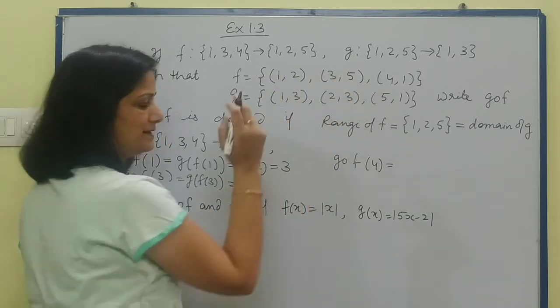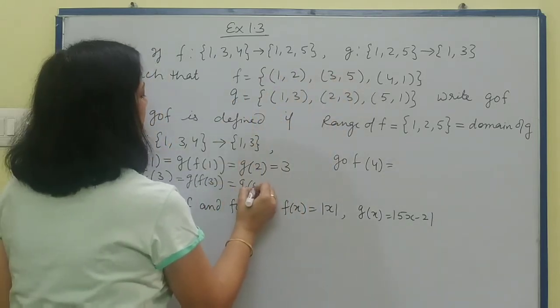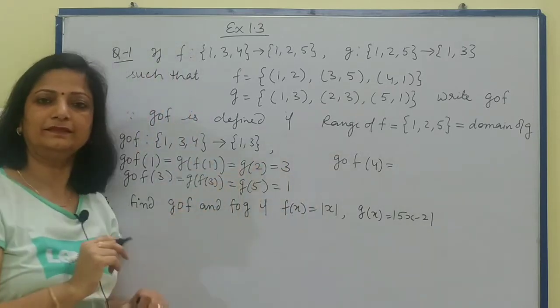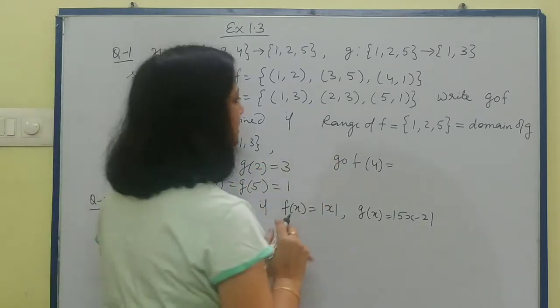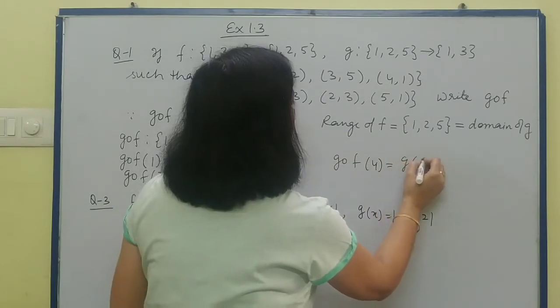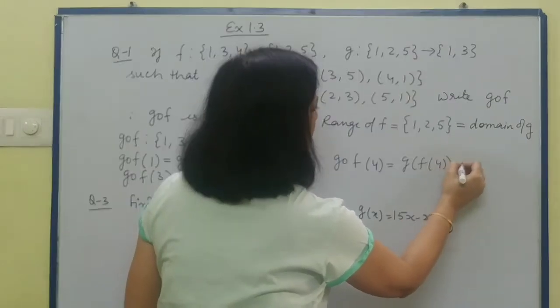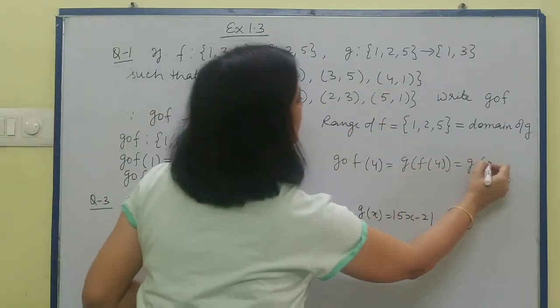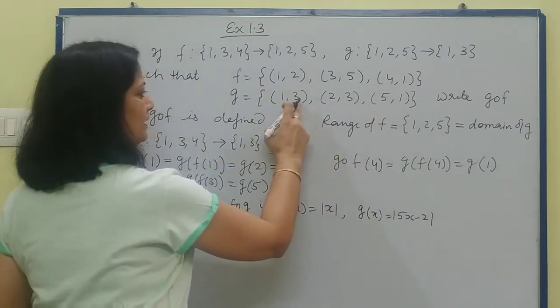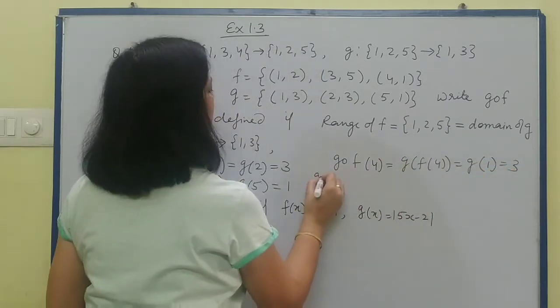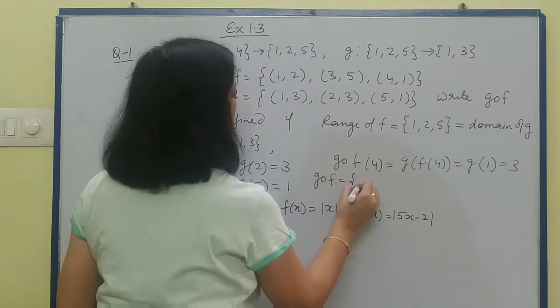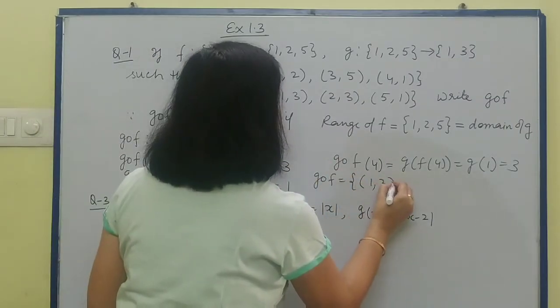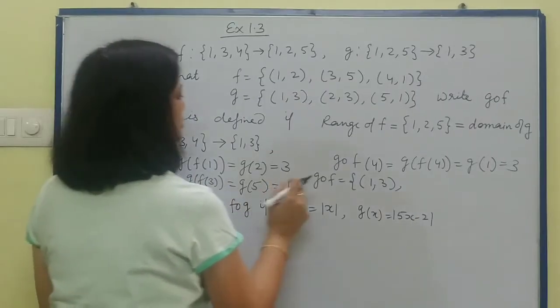Similarly for 3, you'll write g of f(3). What is f(3)? Yes, right, 5. And g(5) is 1. Clear. Now we need to find g composite f(4). f(4) is 1, and g(1) is obviously 3. From here, the set form of g composite f will be: 1 corresponds to 3, 3 corresponds to 1, and 4 corresponds to 3. This is our answer.